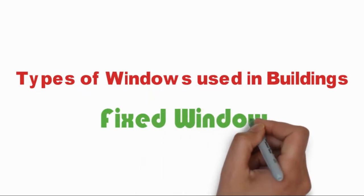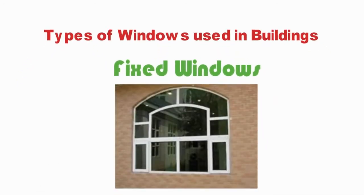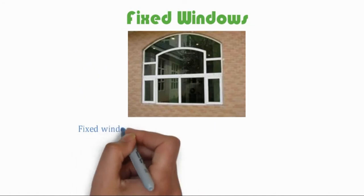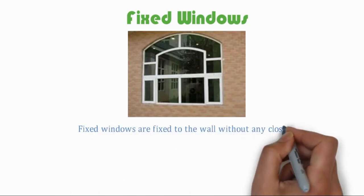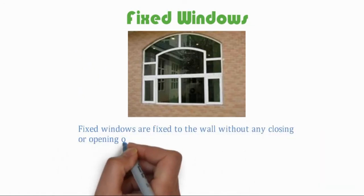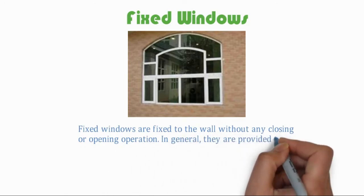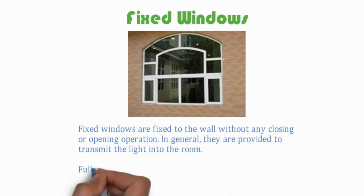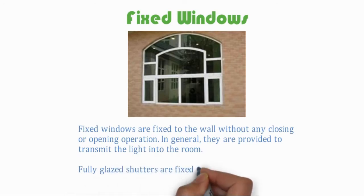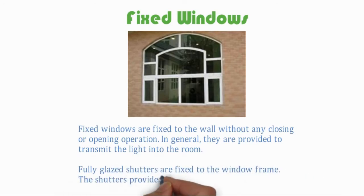Fixed windows are fixed to the wall without any closing or opening operation. In general, they are provided to transmit light into the room. Fully glazed shutters are fixed to the window frame, and the shutters provided are generally weatherproof.